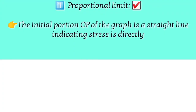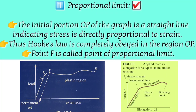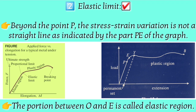The first point is the proportionality limit. It is the point up to which stress is directly proportional to strain — in the graph, the straight line reaches this particular point. Beyond the proportionality limit, the straight line becomes a curve. The region before the proportionality limit — where the line is straight — is called the elastic region. If you remove the force in this region, the body returns to its initial state.